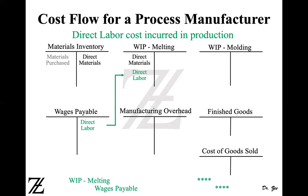Next, direct labor costs incurred in production. When you incur direct labor costs in the melting department, you debit work in process melting and credit either wages payable or cash, depending on how you are paying your workers. In this case, we used wages payable. So wages payable is credited and work in process melting is debited.